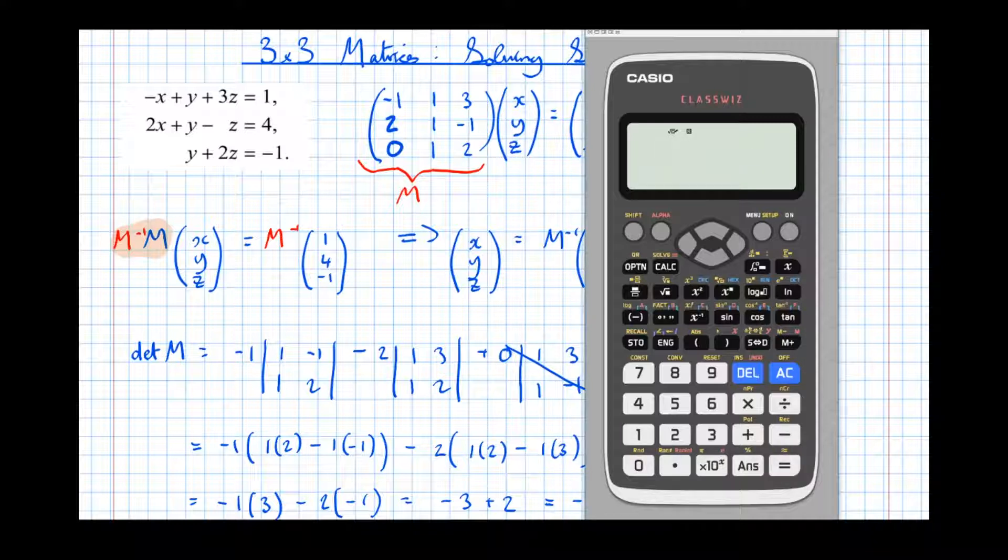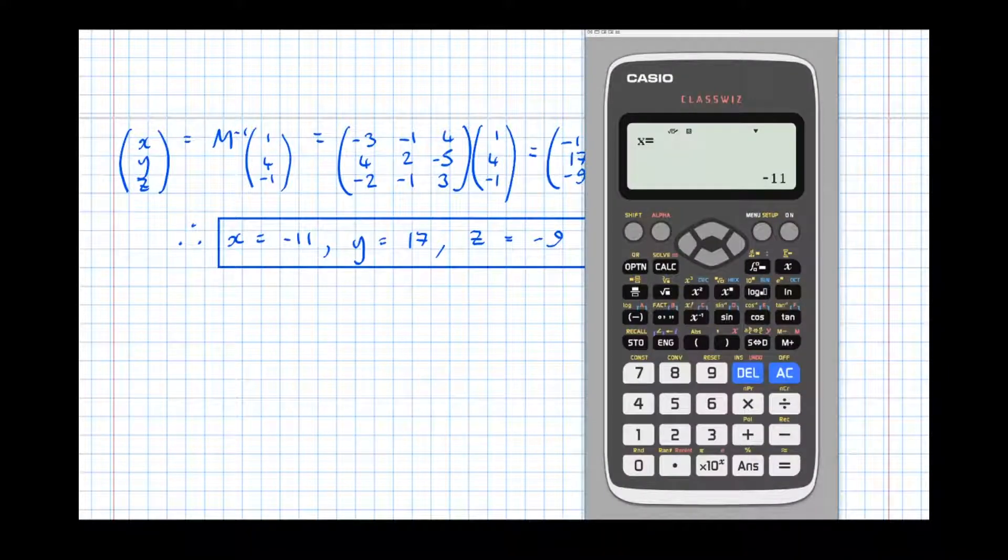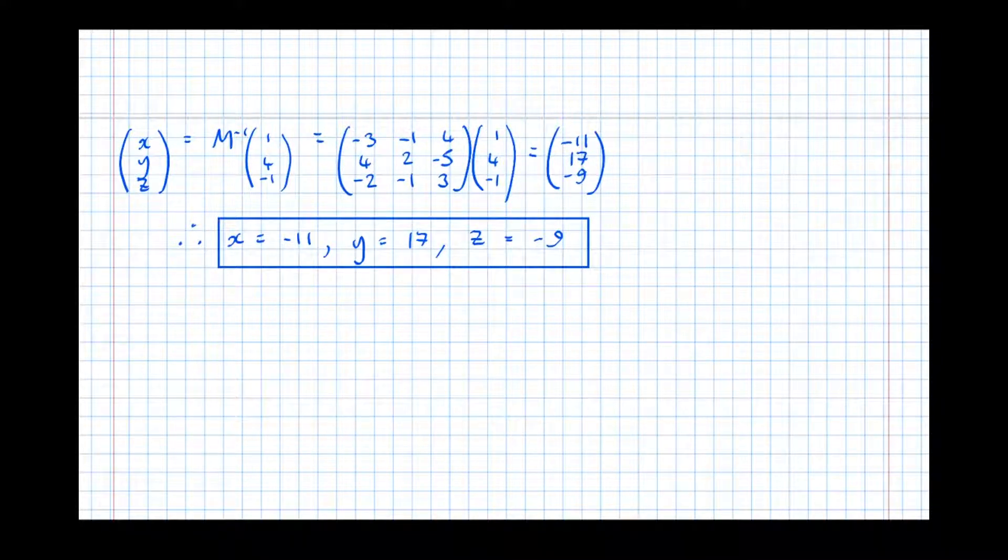So we'll see the first answer is -11 as expected. The second answer, 17 as expected. And the third answer, -9 as expected.